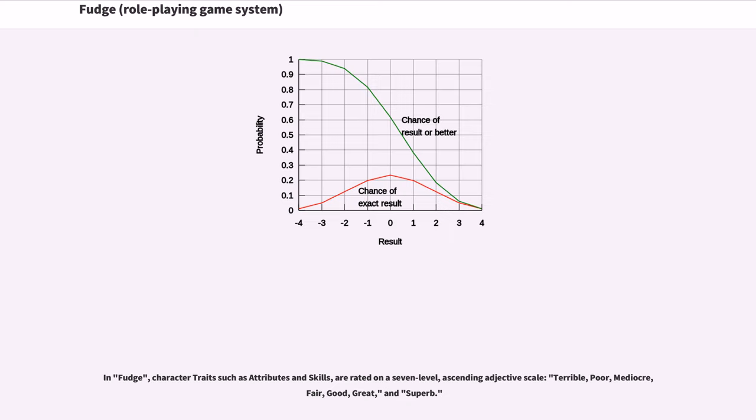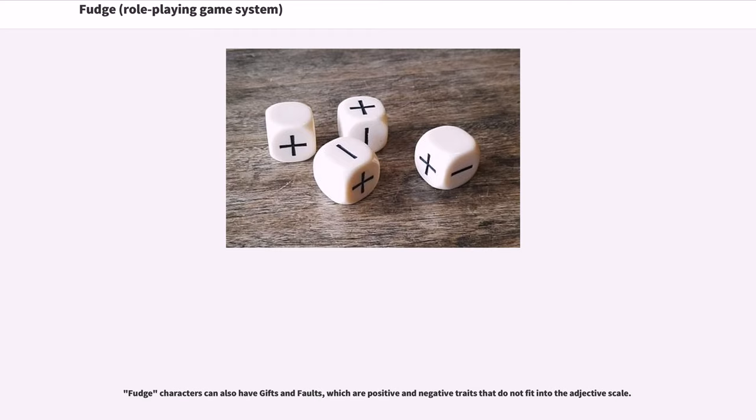In Fudge, character traits such as attributes and skills are rated on a seven-level ascending adjective scale: Terrible, Poor, Mediocre, Fair, Good, Great, and Superb. Fudge characters can also have gifts and faults, which are positive and negative traits that do not fit into the adjective scale.